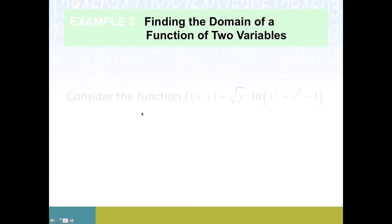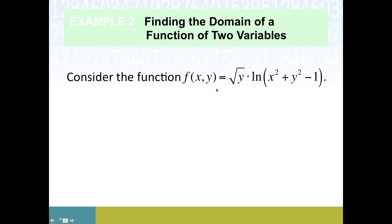We just did some function evaluation, and now we're going to think along the same lines of what we did for functions of one variable. We're going to take a look at domain and ask where this function might be defined. When thinking about the domain of a function of two variables, the same sorts of things that come up with functions of one variable still apply. The three things that can go wrong include dividing by zero.